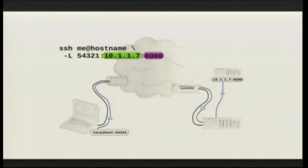You can have a situation where, for example, what looks like my laptop here might be a machine running on a local network that appears to be running a web server. Other machines in the network can connect to that web server, which isn't really there — it's at the other end of an SSH tunnel. There's no way for those local clients to know that.